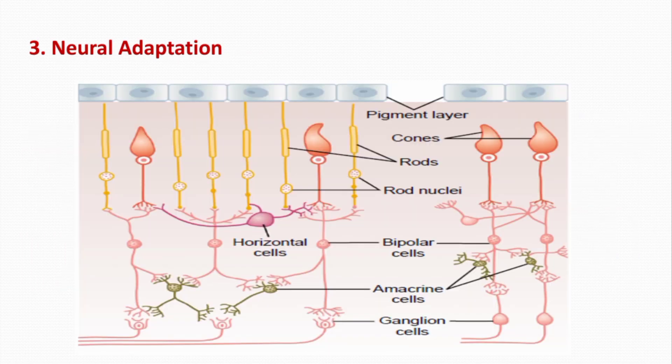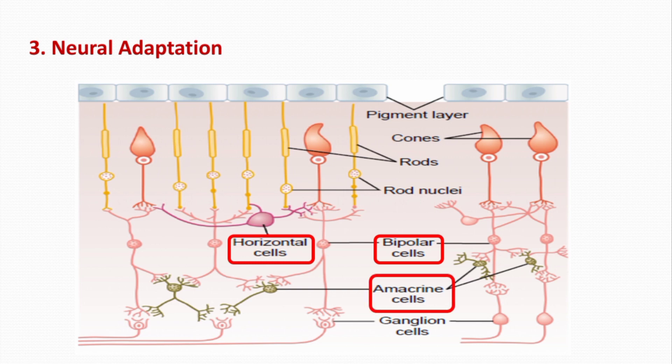The third mechanism, which is very important, is neural adaptation. When light intensity increases, the signals transmitted by bipolar cells, horizontal cells, amacrine cells, and ganglion cells are all intense. Then most of the signals decrease rapidly at different stages of the transmission in the neural circuit. So this neural adaptation also occurs in a fraction of a second.